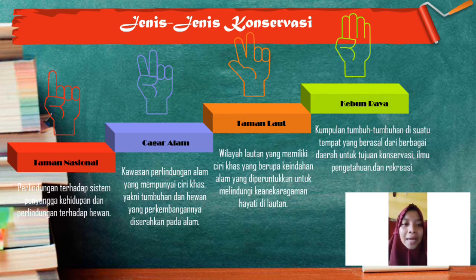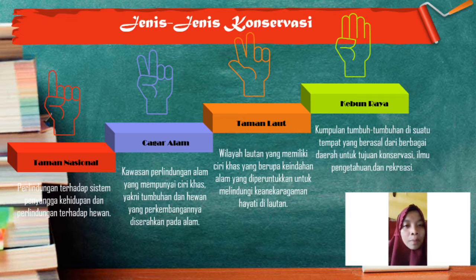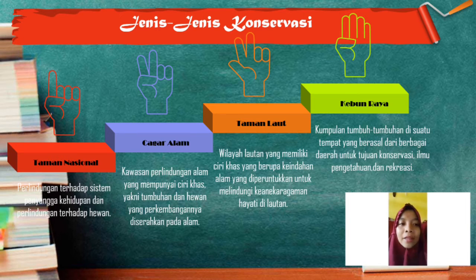The third type of conservation area is the marine park — a park located in the ocean, characterized by beauty and biodiversity, designated to protect marine biodiversity. An example is the Bunaken Marine Park in North Sulawesi.